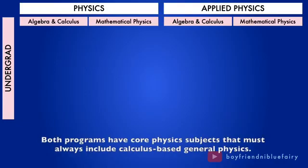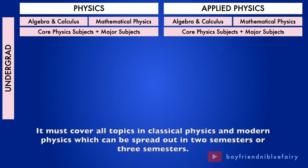Both programs have core physics subjects that must always include calculus-based general physics. It must cover all topics in classical physics and modern physics which can be spread out in two semesters or three semesters.